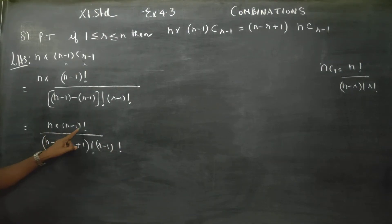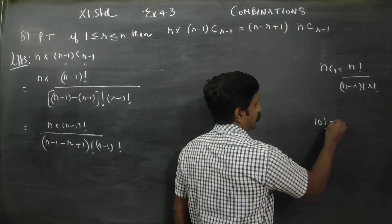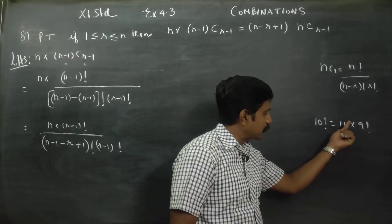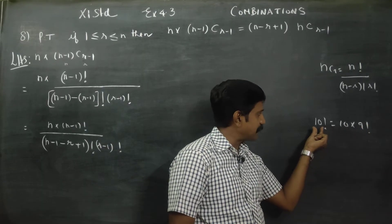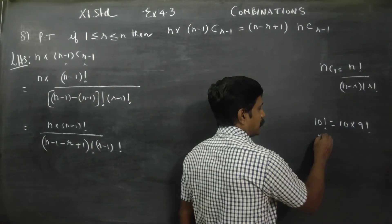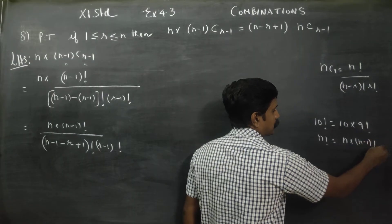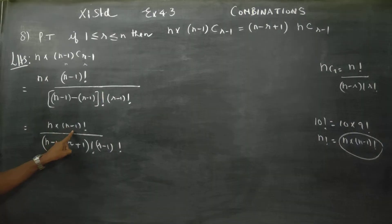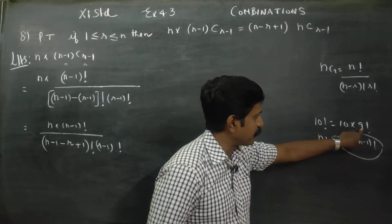We have n into n minus 1 factorial in the numerator. For example, 10 factorial can be written as 10 into 9 factorial — similarly, n factorial equals n into n minus 1 factorial. So we use this property here.